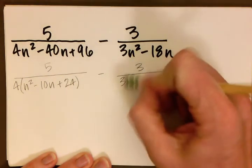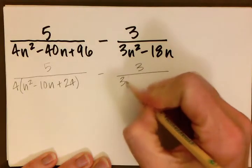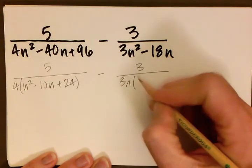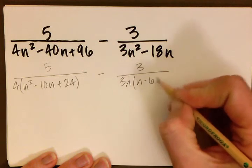We can factor out a 3n from our denominator, and if we do that, we get n minus 6.